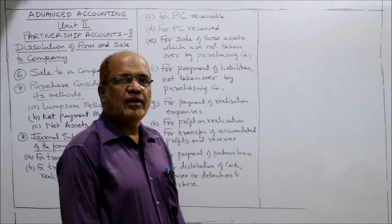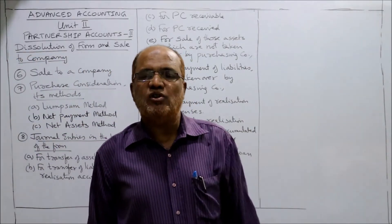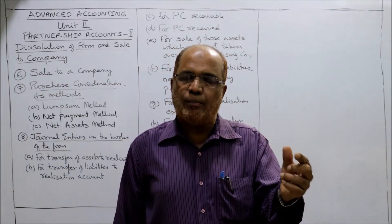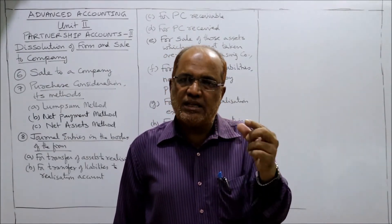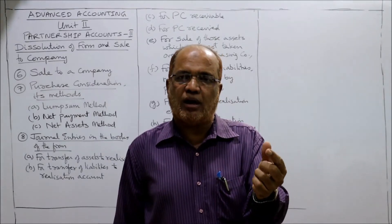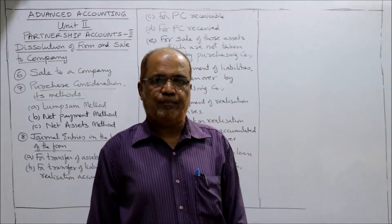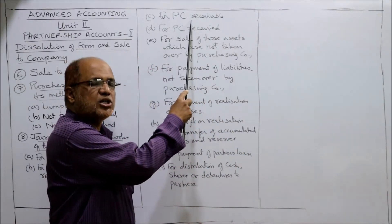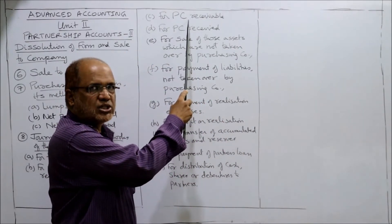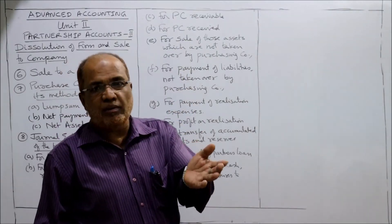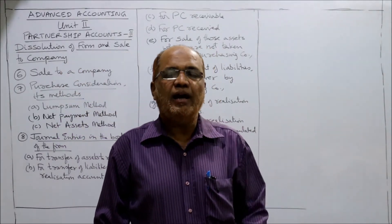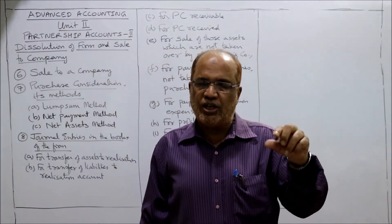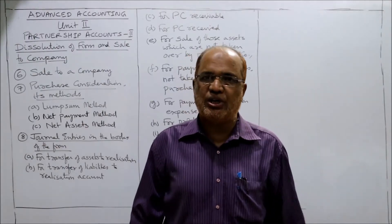The fourth entry is for PC received: Cash Account debit, Shares in Purchasing Company Account debit, Debentures in Purchasing Company Account debit to Purchasing Company Account. In the third entry, purchasing company was debited; in the fourth entry, purchasing company is credited and debit is given to the different forms of payment received.